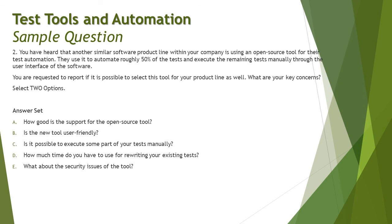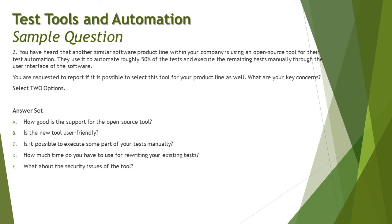Option E: What about the security issues of the tool? Security parameters are not a major concern at this point when comparing an in-house versus open source tool for this selection decision. So putting it all together, the right answers are C and D: whether it is possible to execute some tests manually, and how much time you have to rewrite or migrate your tests — both from a point of ROI and the time needed to convert from your custom-built tool's language to the open source tool's language.